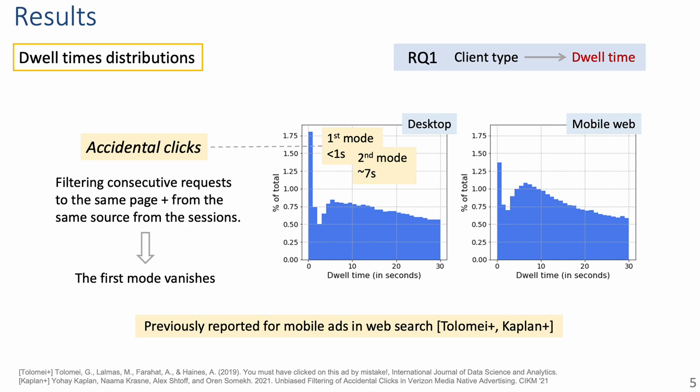Now I'll continue with the dwell time distributions. For visualization purposes, we see a sub-range of the distribution of dwell times for desktop on the left and mobile devices on the right, both exhibiting the same general pattern. In particular, both have two modes: the first occurring around 0 seconds, and the second close to 7 seconds. The first has been previously reported as accidental clicks in the context of mobile devices. Given that we also saw several consecutive clicks to a page were being made from the same referrer in our datasets, we filtered them and indeed observed the first mode vanishing in this filtered version.